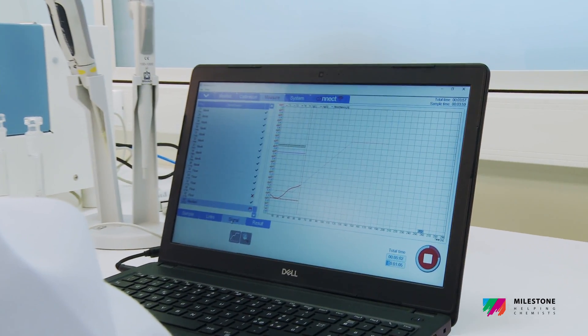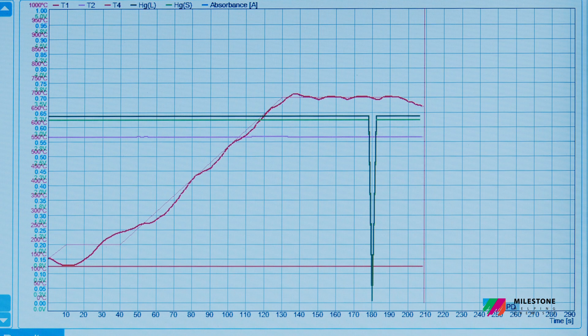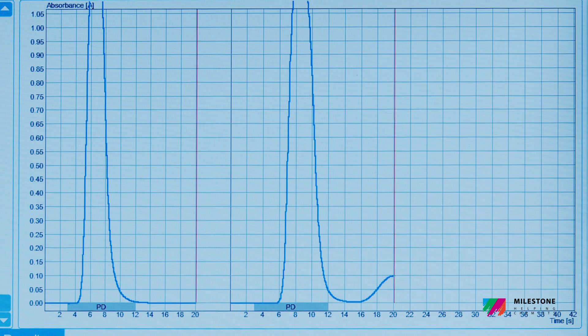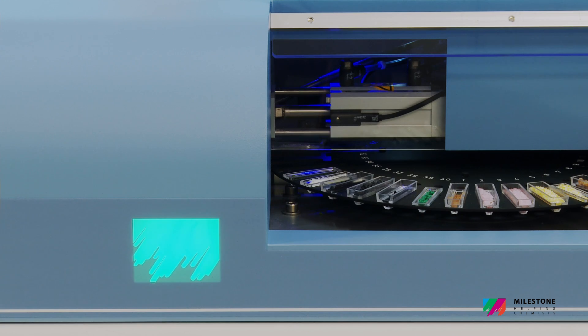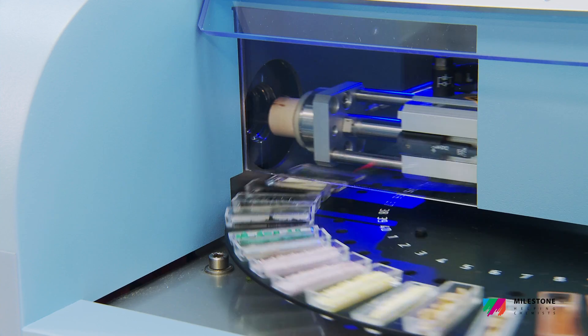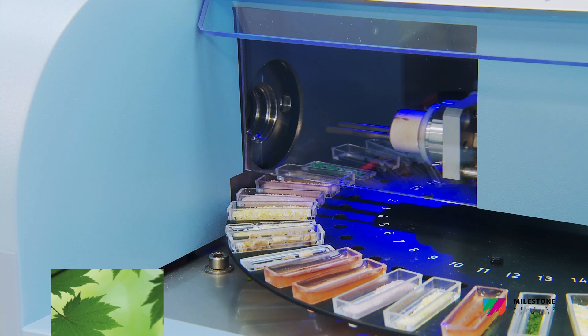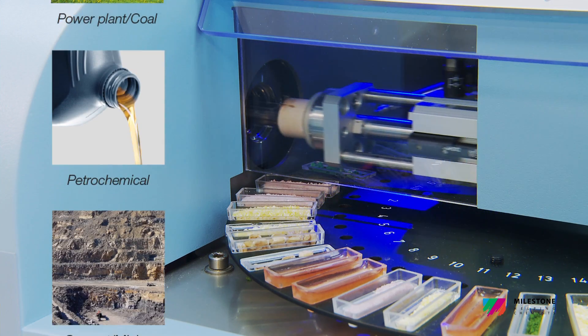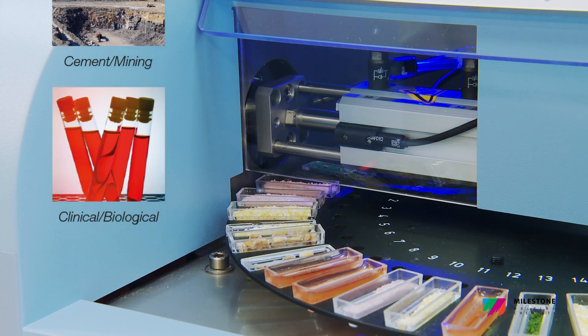The DMA80 EVO runs unattended, offering a unique ease of use, performance, and productivity in mercury analysis. The DMA80 EVO has become the standard in various industries, such as environmental, food, energy, petroleum, cement, mining, and many others.